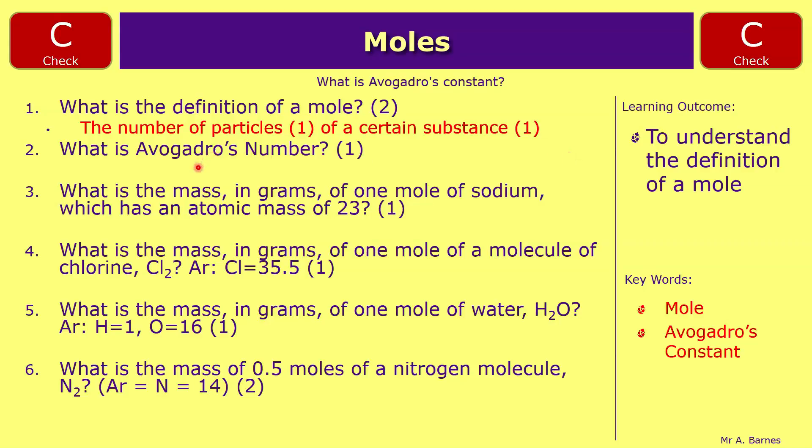Avogadro's number also you have to learn. It's 6.02 times 10 to the 23. And that gets you one mark for there. Then what is the mass in grams of one mole of sodium which has an atomic mass of 23? So if you've got one sodium atom and the atomic mass is 23, then the mass in grams will be 23 for one mole.